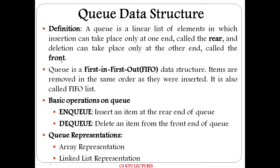A Queue has two ends: the front end and the rear end. Insertion happens at the rear end and deletion happens at the front end. Queue is a first-in, first-out data structure. Insert at rear end, remove at front end — this is called DeQueue.